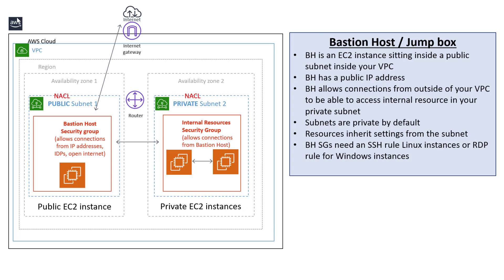So what is a Bastion Host? A Bastion Host is an EC2 instance sitting inside a public subnet inside of your VPC. It has a public IP address and can be configured using security groups to allow traffic from the public internet, specific IP addresses for more security, or corporate identity providers.